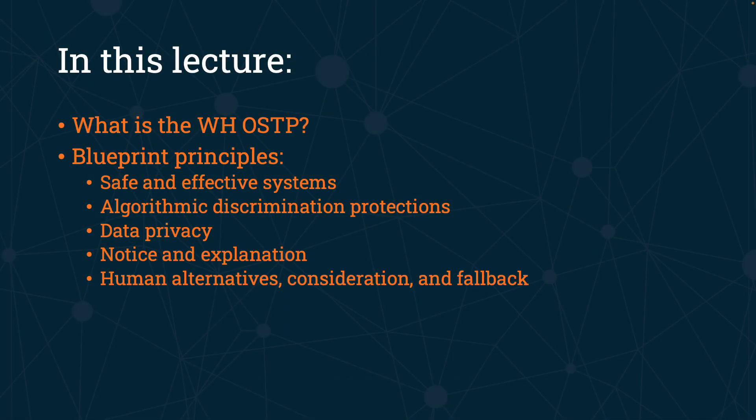In this lecture, we are going to review the White House blueprint for an AI Bill of Rights. We will begin by looking at the office that published this document, the OSTP. We will then go over the five blueprint principles, which are safe and effective systems, algorithmic discrimination protections, data privacy, notice and explanation, and human alternatives, consideration, and fallback.